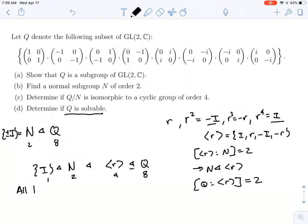But all the quotients have order 2. 8 divided by 4 is 2, 4 divided by 2 is 2, 2 divided by 1 is 2. So all the quotients have order 2. And there is only one kind of group of order 2, namely cyclic groups.